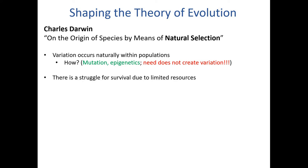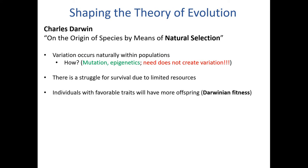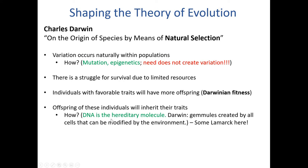Variation occurs naturally. There's a struggle for survival due to limited resources, and individuals with favorable traits will have more offspring — in other words, they have higher Darwinian fitness. The offspring of these individuals will inherit their traits. Darwin didn't know exactly how this happened because he didn't really know about DNA and the principles of inheritance. Nowadays we know that DNA is the hereditary molecule. Darwin's thinking was this idea of gemmules — created by all cells and potentially modified by the environment — so there's actually some Lamarckian thinking there. Darwin didn't have it all figured out, but he did give us a pretty good model to work off of.